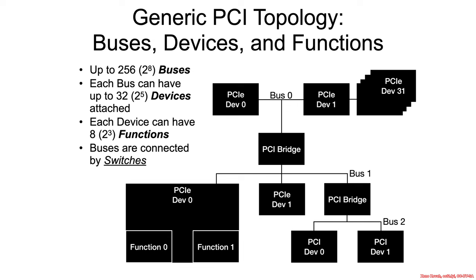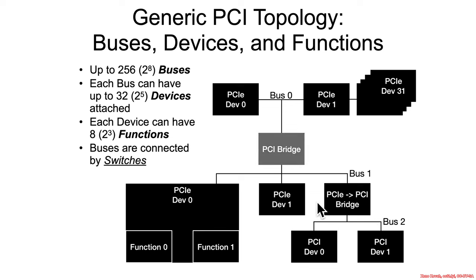In terms of topology differences, it looks basically the same in that you still have 256 buses, 32 devices, and 8 functions. In PCI, buses were connected by bridges, and you can still in PCIe have a PCIe-to-legacy PCI bridge. But when talking about native PCIe interconnects, we're instead talking about switches — similar to a network switch, basically routing transactional packets between a bunch of different devices on this low-level fabric.